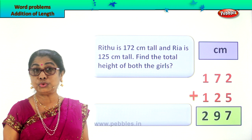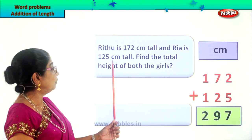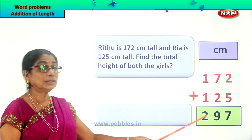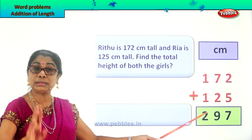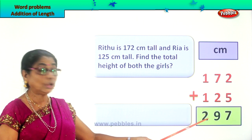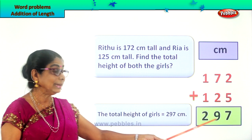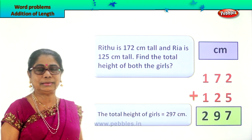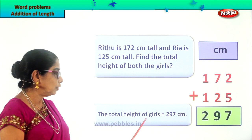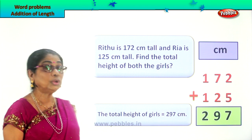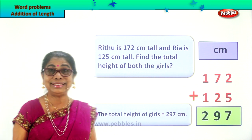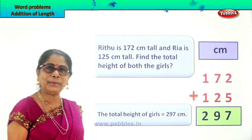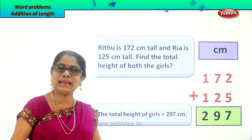It's the total height of the two girls. The total height of both the girls, Ritu and Ria, is equal to 297 centimeters. Did you enjoy the word problem? Let's look at another. Let's read the problem together.